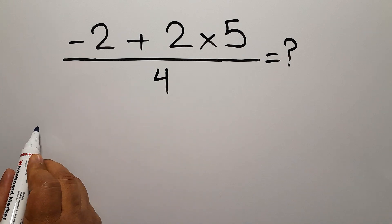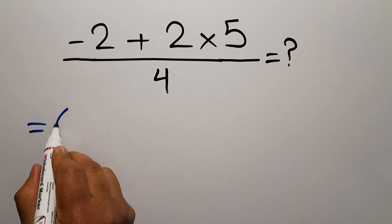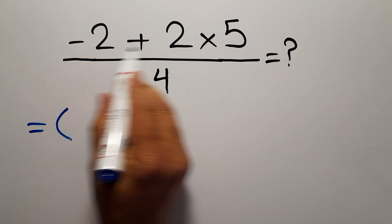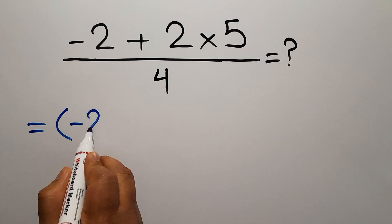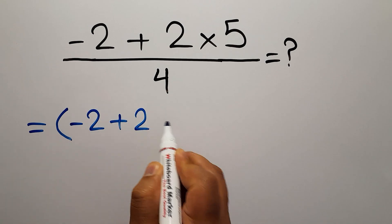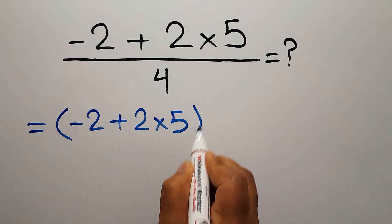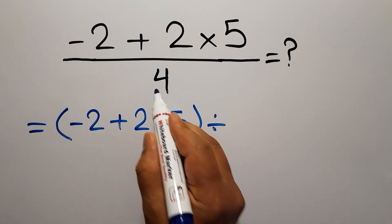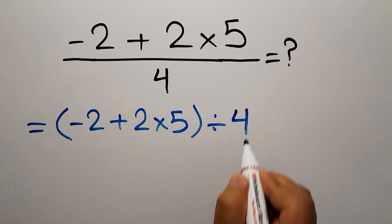Instead of this fraction, we can write parentheses around the numerator, which is negative 2 plus 2 times 5, divided by the denominator, which is 4.